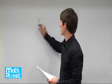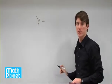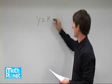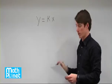In this case we know that the variable y is directly proportional to the variable x. Directly proportional means there's some proportionality constant, we'll call it k times x, and directly proportional means that we add nothing to it.